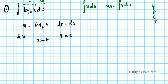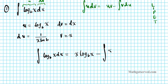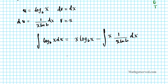Now we can set up the equation. The antiderivative of log base b of x dx equals uv — which is x log base b of x — minus the indefinite integral of v du, which is the integral of x times 1 over (x ln b) dx. The x's cancel out.